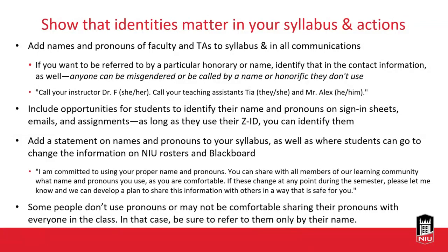What I do with that information is take it and put it into a table or Excel sheet so I can quickly look up each person's Z ID and what they want to be called, because it doesn't always match the name on the email. I've taught a bunch of Ashleys who want to be called different things, so having that information — whether or not they are trans — is really helpful to ensure I know exactly what they want to be called, and that they know I know who they are.